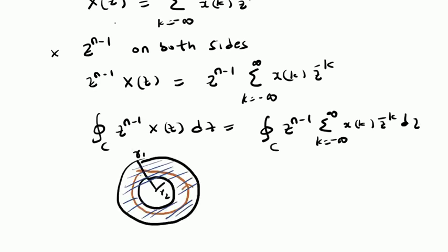To understand this integration over the closed contour C, we are basically doing this integration within the ROC of the Z-transform. The closed contour integration is integration in the ROC in the anti-clockwise direction. Generally, for a Z-transform X of Z, the ROC is defined by a ring-like structure between two circles of radii R2 and R1. We are doing this integration in this ring-like structure in the anti-clockwise direction. Since the Z-transform converges in this ROC region, the integral on the right side will also converge.